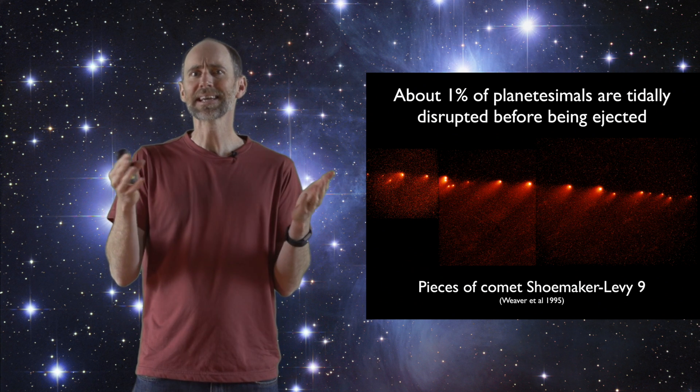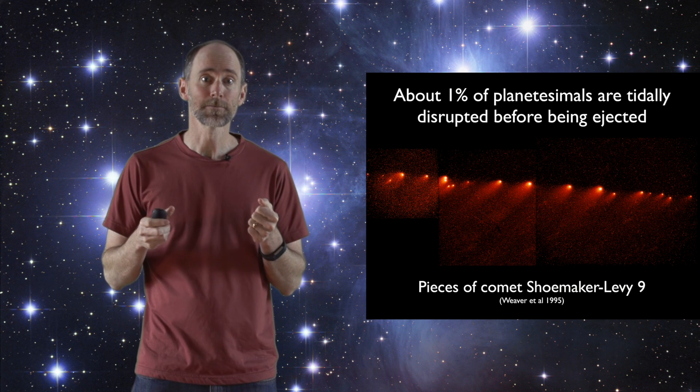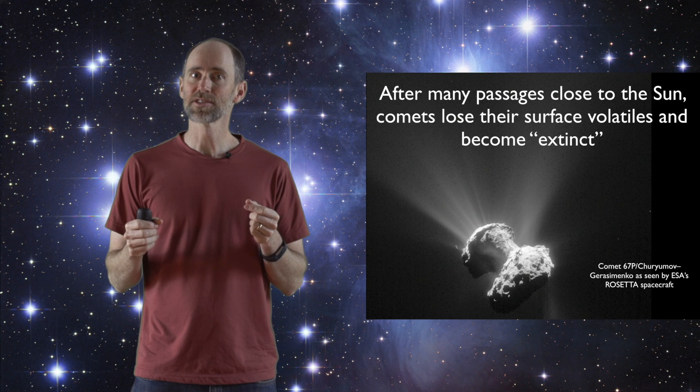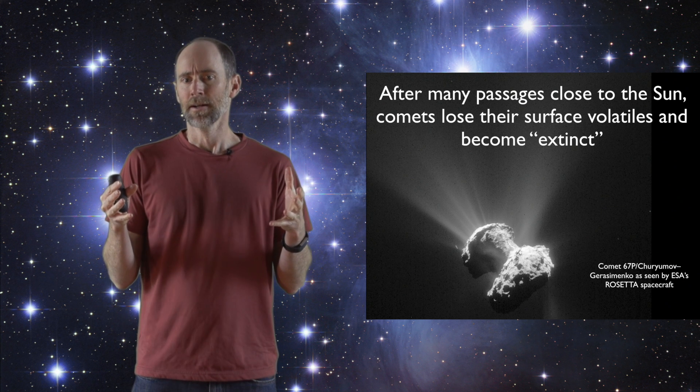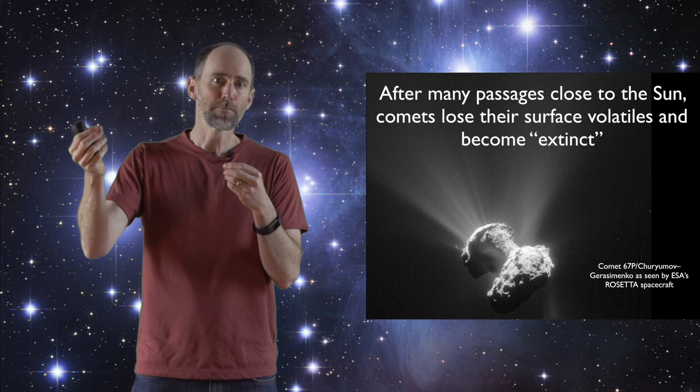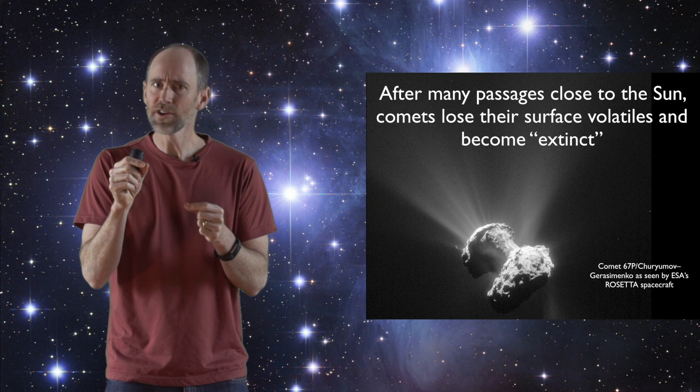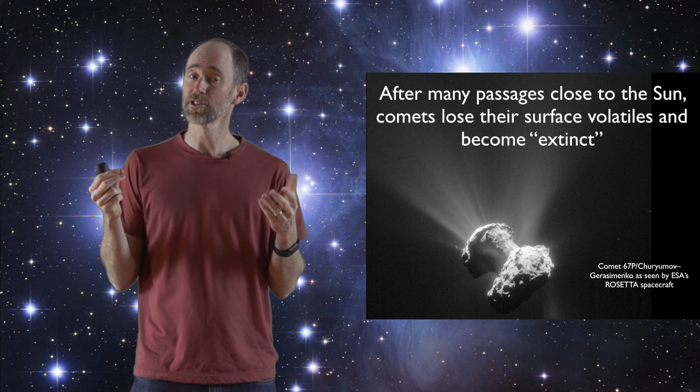and our simulations indicate that it happens a lot when giant planets eject planetesimals. There's one more piece of the story here. So our simulations show that a small fraction of planetesimals get torn to pieces by giant planets before they get ejected, but those pieces are not immediately thrown out into interstellar space.